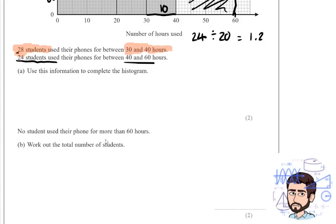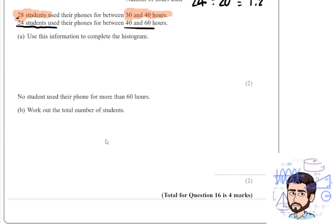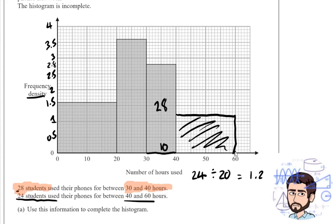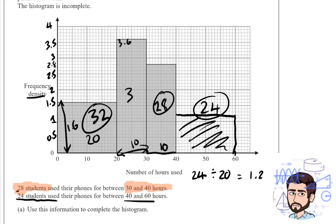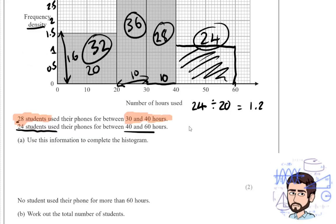No students use their phone for more than 60 hours. Work out the total number of students for two marks. Well, that must mean that everything is contained within this histogram. We know that these two bars are worth 28 and 24 respectively. We just need to work out the frequencies of these other two bars. The height of this bar is 1.6 and the width is 20, so I do 1.6 times 20, which is 32. And then to work out the frequency of this bar, the width is 10 and the height is 3.6, so 10 times 3.6 is 36. So then I just add up all those numbers: 32 plus 36 plus 28 plus 24.